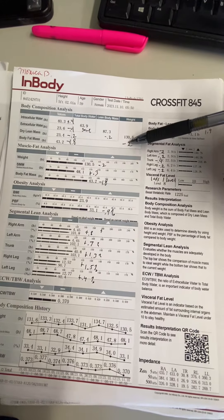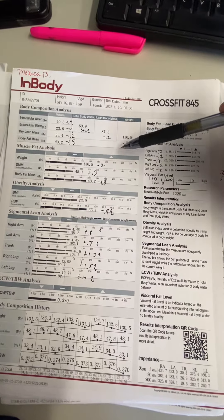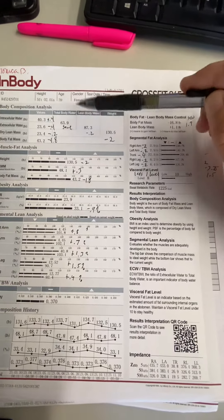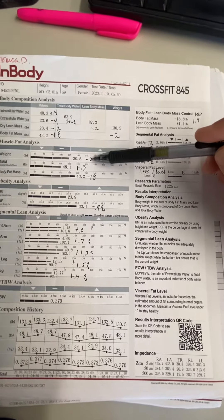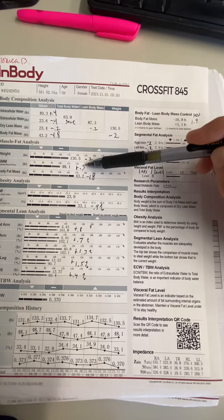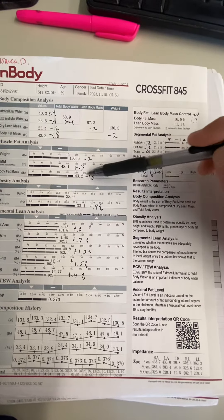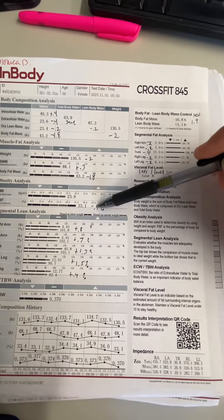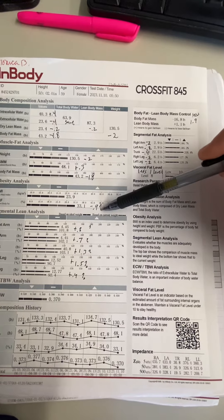So your body weight was down two pounds, mostly body fat, which is exactly what we want. You lost two pounds of body weight and gained 0.3 pounds of skeletal muscle mass, and your body fat went down 1.8 pounds. Your percent body fat decreased 0.9%, which is almost one full percent, which is great.